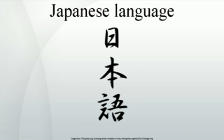Hiragana can also be written in a superscript called furigana above or beside a kanji to show the proper reading, done to facilitate learning or to clarify old or obscure readings. Katakana, like hiragana, is a syllabary. Katakana are primarily used to write foreign words, plant and animal names, and for emphasis. For example, Australia has been adapted as Osutoraria, and supermarket has been adapted and shortened into suupaa. Historically, attempts to limit the number of kanji in use commenced in the mid-19th century, but did not become a matter of government intervention until after Japan's defeat in World War II.